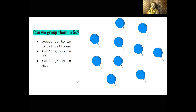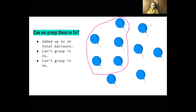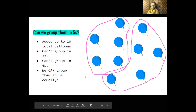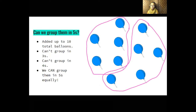Let's try using five as our grouping method — grouping five balloons at a time. We got five here: one, two, three, four, five. And then five more here: one, two, three, four, five. We were able to group five balloons at a time without anything left over. So we can group our ten balloons into fives equally.